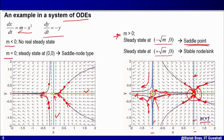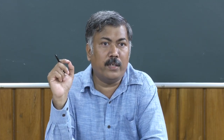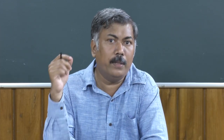So the steady state at (+√m, 0) is a stable node and sink, whereas the steady state at (−√m, 0) is a saddle point, which is unstable. With the parameter m, we observe two phenomena: the number of steady states changes with m, and the type of stability also changes. When m = 0, we have a saddle node (unstable); when m > 0, we have both a saddle point (unstable) and a stable node.